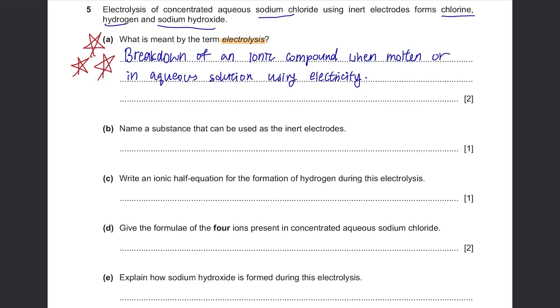Part B: Name a substance that can be used as inert electrodes. There are two types. One is platinum and the other one is graphite.